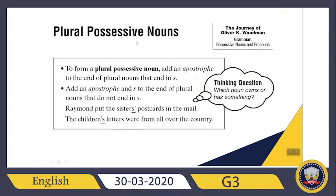What about plural possessive nouns? What does it mean? I can put an apostrophe, but if my word finishes with 's', I just need to add an apostrophe. For example, the children's letters — children is my noun. Children is a plural noun, and it's not finished with 's', so I need to put an apostrophe then 's'. But 'sisters' is another plural noun that is finished with 's'. In this situation, I just need to add an apostrophe.